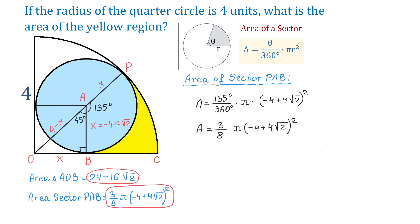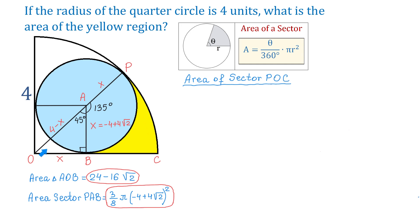Next we will find the area of sector POC. This angle is 45 degrees. Then the area of this sector is 45 over 360 degrees multiplied by pi times the radius 4 squared. Simplifying this expression, the area equals 2 pi.